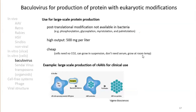Another virus used in vitro is the baculovirus, which infects insects and is used with insect cell lines like S2. It's primarily used for large-scale protein production — offering post-translational modifications not available in bacteria, high protein output per liter, no need for CO2 or serum, suspension growth, and room-temperature incubation. This makes it cost-effective compared to mammalian cells, combining bacterial-scale output with eukaryotic post-translational processing.